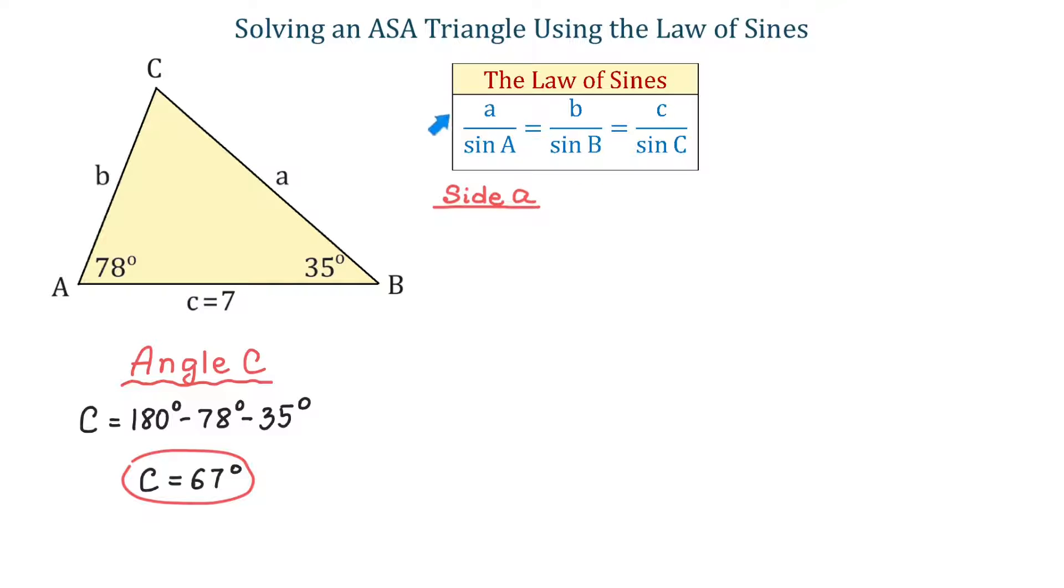First, I will need A over sine of A because we have to find side A. Then, I will also use C over sine of C because we know side C and angle C. So, A over sine of angle A equals C over sine of angle C.